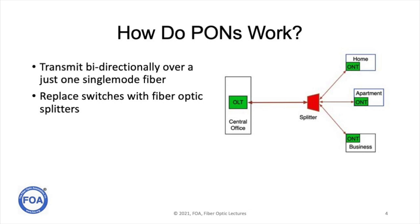In the simple diagram shown here, you can see how a signal from the central office is sent out to a splitter. The optical splitter, which is a totally passive component, splits the signal into multiple fibers, which then connects up multiple users.